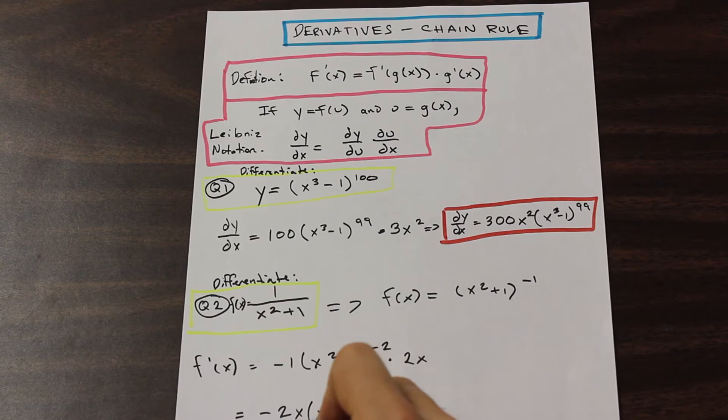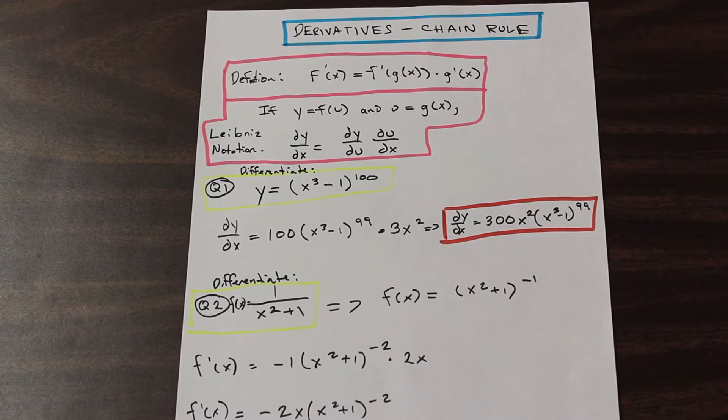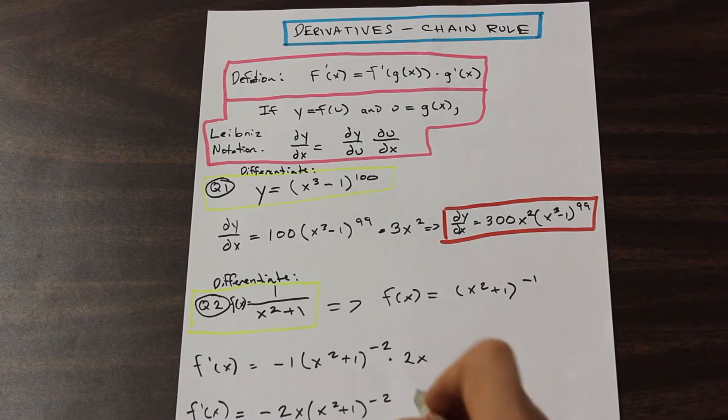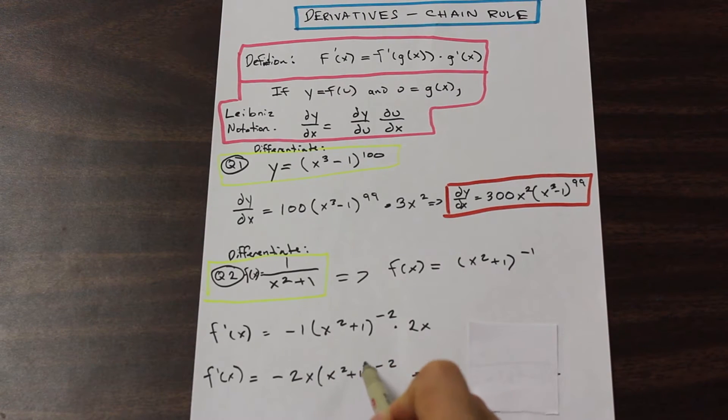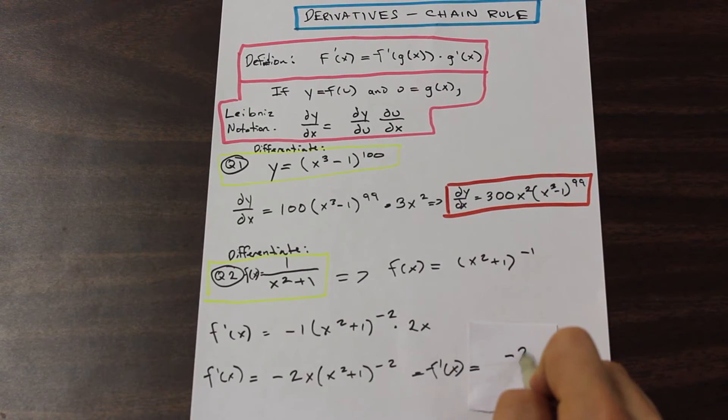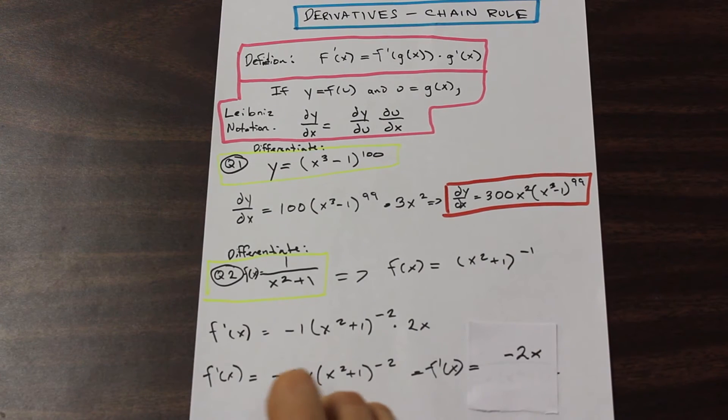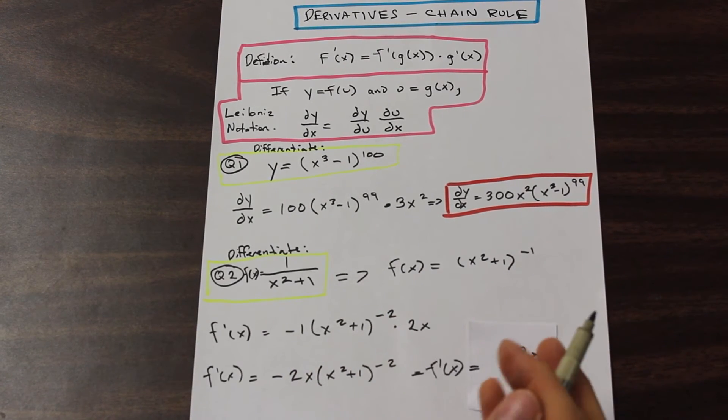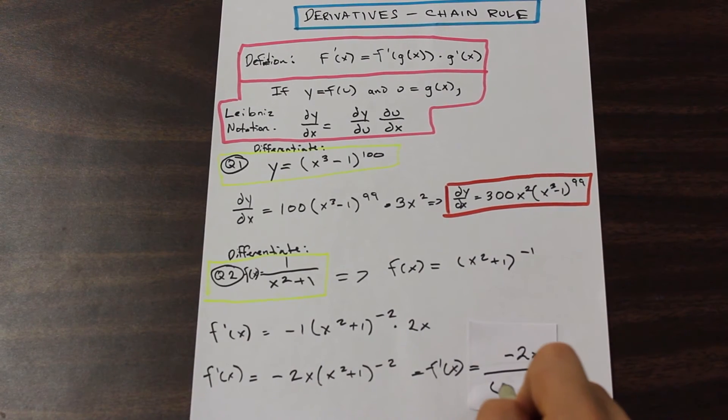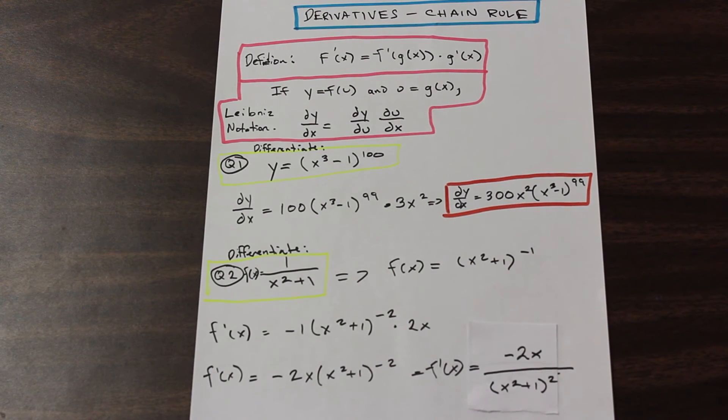And if we go ahead and simplify that, we should be left with negative 2X. We'll just multiply 2X by negative 1, and then we have X squared plus 1 to the negative 2, and that is our F prime of X. So we can go ahead and simplify that further. We have this X squared plus 1 term, and that's the negative 2, so we can bring that to the bottom. So we have F prime of X is equal to negative 2X. Because the negative 2X isn't included with the negative 2, so don't make the mistake of bringing this 2X down to the bottom. Because that's not the correct answer. That would be very wrong. And we have X squared plus 1 squared.